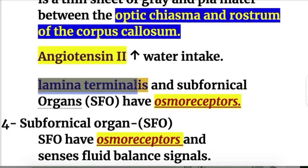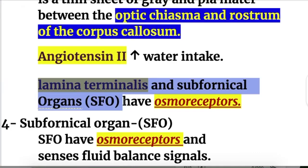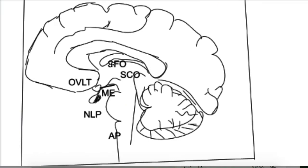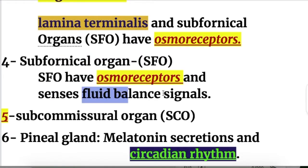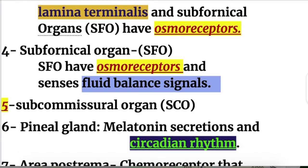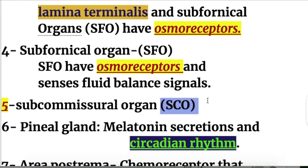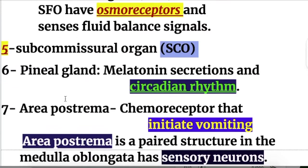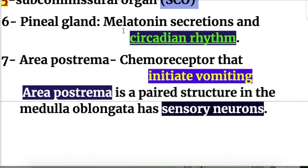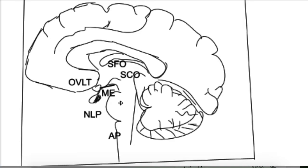The lamina terminalis and the subfornical organs have osmoreceptors and send fluid balance signals. Number five is the subcommissural organ, below the subfornical organs. And number six is the pineal gland, which is a midline structure.